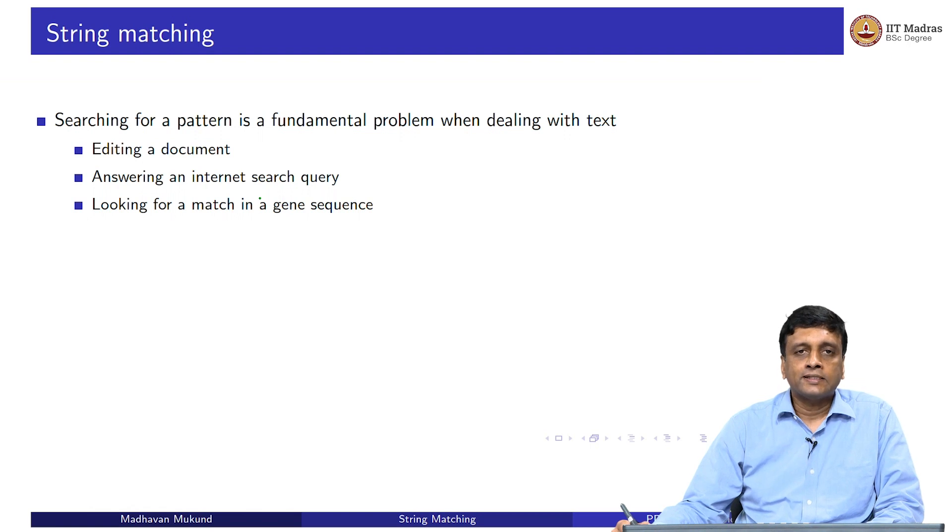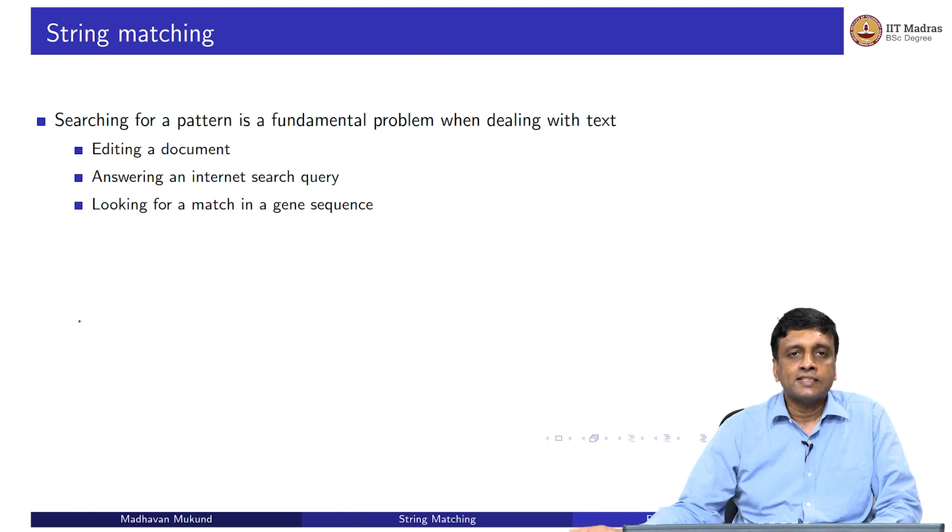We have already seen applications outside conventional text processing. For instance, in genetics, you might want to look for a particular gene sequence in some string of DNA. In all of these cases, we have a pattern of text which we want to compare against some given text and find out if there is a match or not.